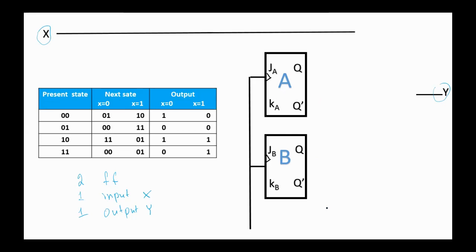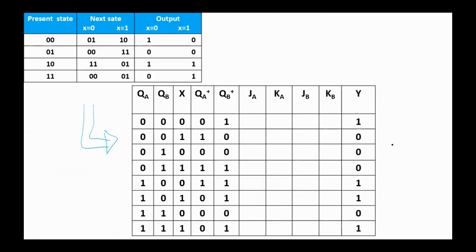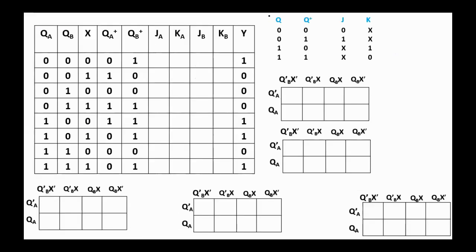Our task is to find out the values of JA, KA, JB, KB, and the output Y. Here is the excitation table for the circuit. Given the present state of the two flip-flops and the next state, we have to find out the inputs of these flip-flops. To do that, we recall the excitation table for the JK flip-flop.